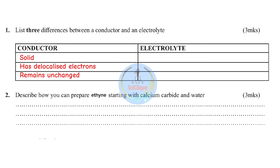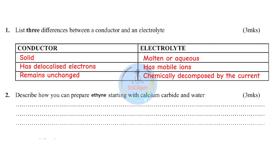Electrolytes are substances that can be in molten state or aqueous state — for example, molten lead(II) bromide or aqueous sodium chloride solution. They are capable of conducting an electric current because they have mobile ions that can move within and transmit the electric current. The last difference: conductors remain unchanged when they conduct electricity, but electrolytes get chemically decomposed — for example, molten lead(II) bromide produces lead metal and bromine.